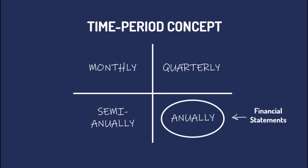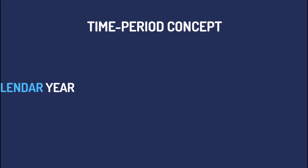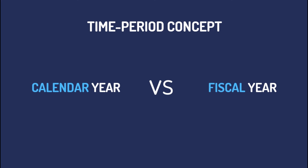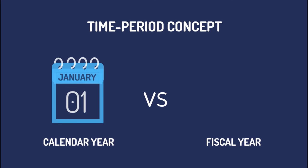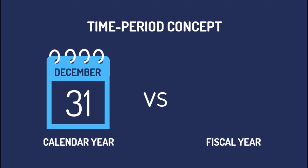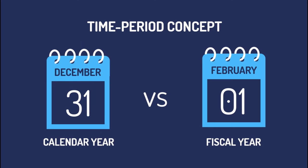When we say calendar year, it is the accounting period that starts from January 1 and ends on December 31. On the other hand, fiscal period is the reporting period that starts with any month other than January 1. It may start on February 1, March 1, April 1, May 1, June 1, July 1, August 1, and so on, but not January 1. Therefore, if it doesn't start on January 1, the accounting period will not also end on December 31.